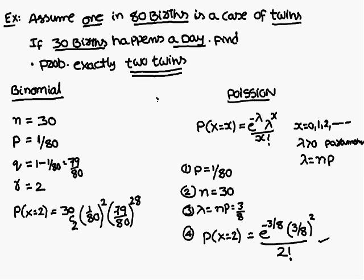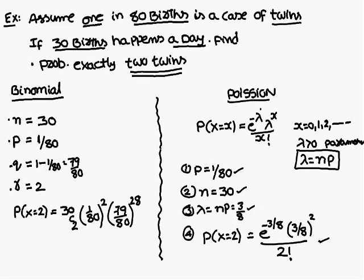Now we can compare the binomial and Poisson distributions. In the binomial distribution you work with four characters: n, p, q, and r. In the Poisson distribution you work with only lambda and x. If the lambda value is not directly given, you can find it using the formula λ = n × p. Here lambda equals 3/8, and that gives us the probability of exactly two twins. Thank you.